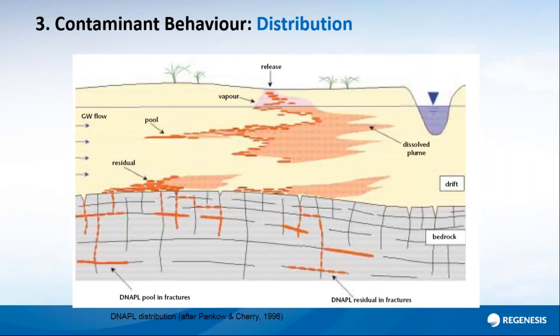Looking more closely at what happens when you spill chlorinated solvents: the contamination moves down through the vadose zone to the groundwater. With a petroleum hydrocarbon it would float on the surface as LNAPL — light non-aqueous phase liquid — which you could pump away and then deal with the dissolved phase. It's a little different with chlorinated solvents. They're heavier than water, so they want to sink, and they have a very low viscosity, so they can percolate and infiltrate a long distance.